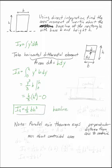That is compared to what we had before was 1 12th bh cubed for the centroidal axis.